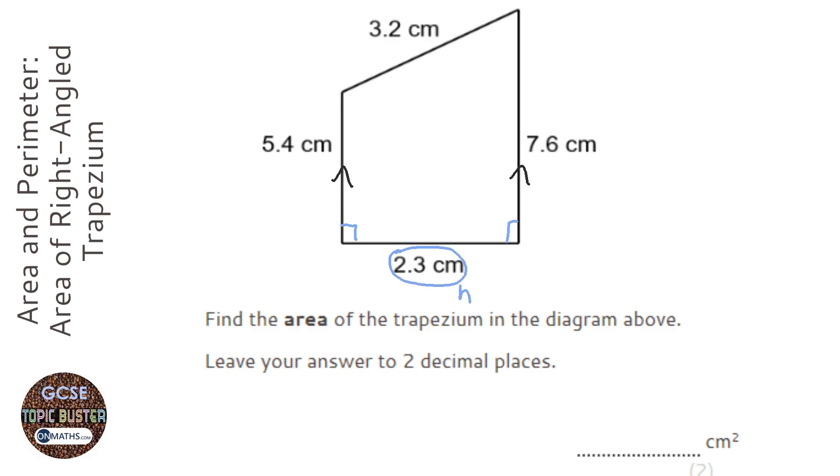And the two bases are basically the length of the parallel sides, so 7.6 and 5.4. Now normally with a rectangle you just do base times height, but here we have two bases. So what we need to do is work out the average of the bases, and we do that by adding them together and halving it, just like the mean average.